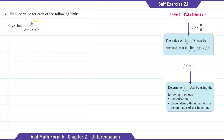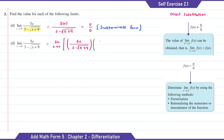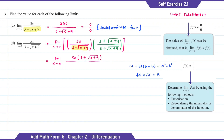Question D: we're going to substitute x with 0 as x is approaching 0. The answer of this is 0 over 0. To find the limit value for D, here we need to rationalize the denominator. So here the conjugate will be 3 plus square root of x plus 9.